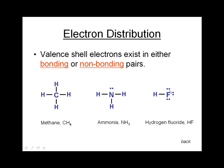Fluorine has seven valence electrons, and it completes its octet by having one bonding interaction with a hydrogen atom. So it has one bonding electron pair and one, two, three non-bonding electron pairs.